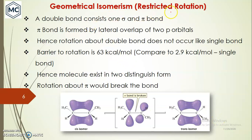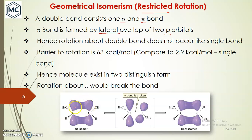Geometrical isomerism arises due to restricted rotation. Usually a double bond consists of one sigma bond and one pi bond. A sigma bond is formed by head-on overlap and a pi bond is formed by lateral overlap of 2p orbitals — typically an unhybridized orbital. Hence rotation about the double bond does not occur like in a single bond. Single bonds usually rotate freely, but rotation in a double bond is not possible because the pi bond is formed by lateral overlap; you cannot easily break this overlap, so rotation is restricted.